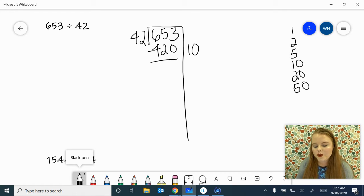Now let's subtract. 3 minus 0 is 3. 5 minus 2 is 3. 6 minus 4 is 2. 233. Well, I know I can't do my 10 again, so I'm going to try 5.